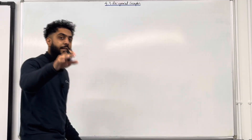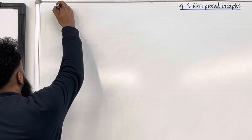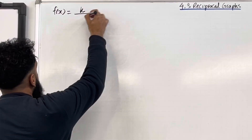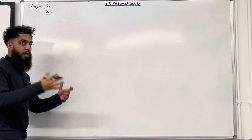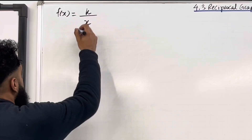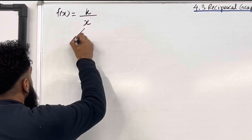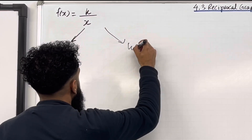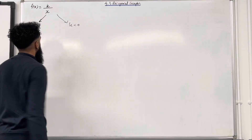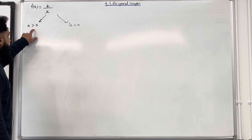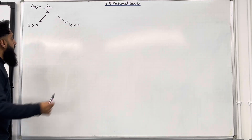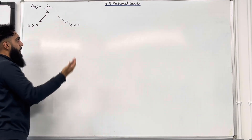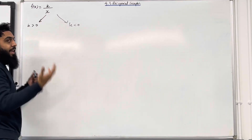Consider the following function: f of x is equal to k over x. We're going to look at two scenarios. The first scenario, when k is greater than 0. The second scenario, when k is less than 0. k is greater than 0 is essentially the numerator being positive. k is less than 0 is essentially the numerator being negative.